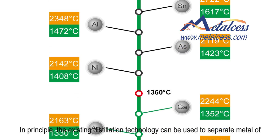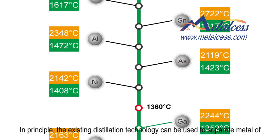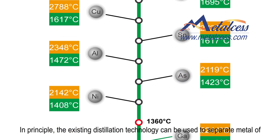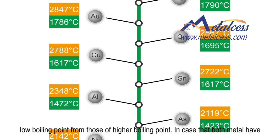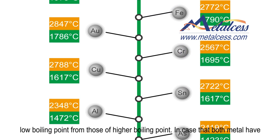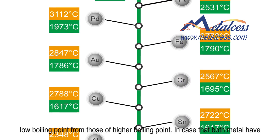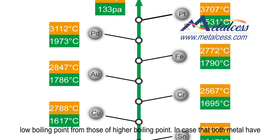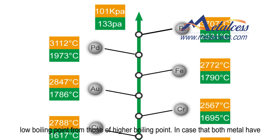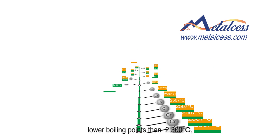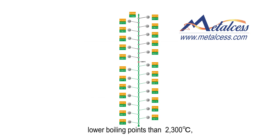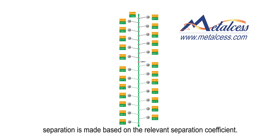In principle, the existing distillation technology can be used to separate matter of lower boiling point from those of higher boiling points. In case the target matter has a lower boiling point than 2300 degrees Celsius, separation is made based on the relevant separation coefficient.